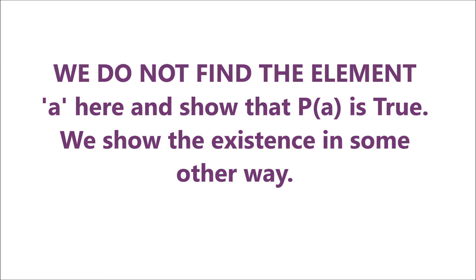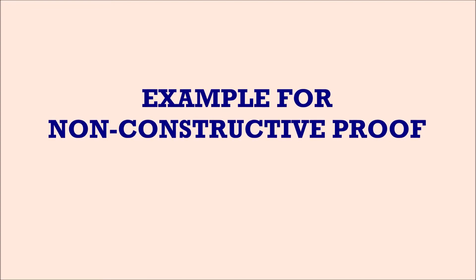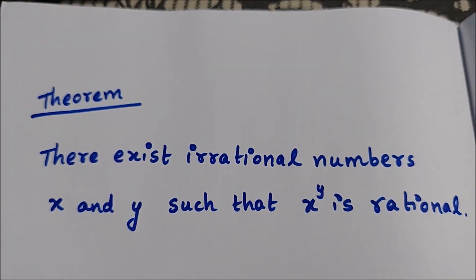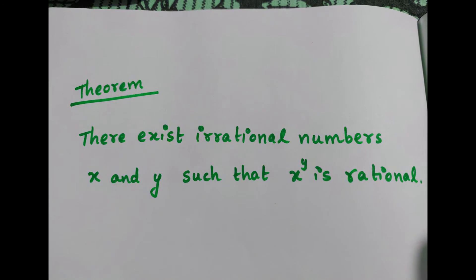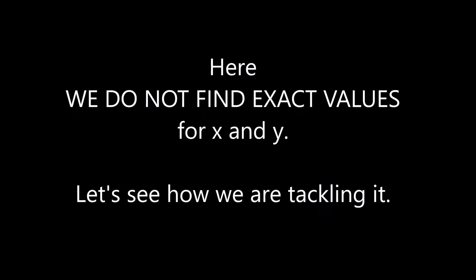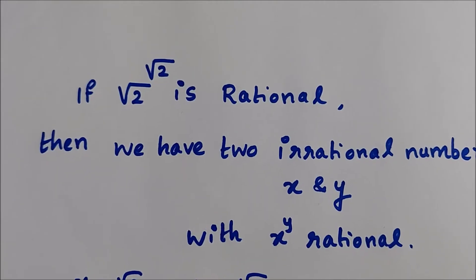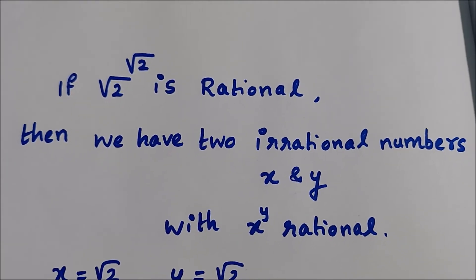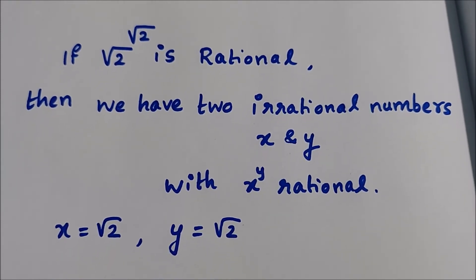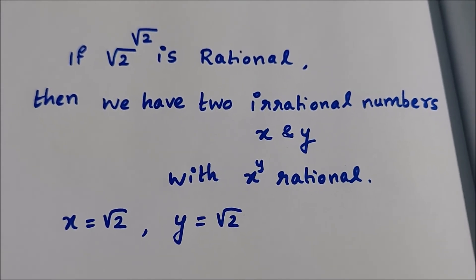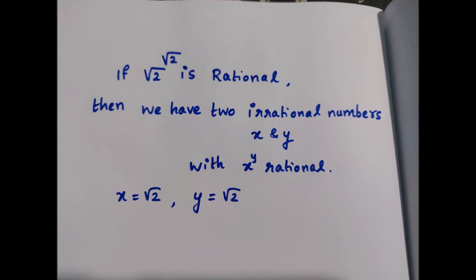Let's take an example to understand how non-constructive existence proof works. The theorem states that there exist irrational numbers X and Y such that X raised to Y is rational. Here we are not going to find particular values for X and Y such that X raised to Y is rational. Consider the number √2 raised to √2. We don't know whether it is irrational or rational. Suppose √2 to the power √2 was rational — then we have X and Y such that X raised to Y is rational, and we got what we needed to prove.